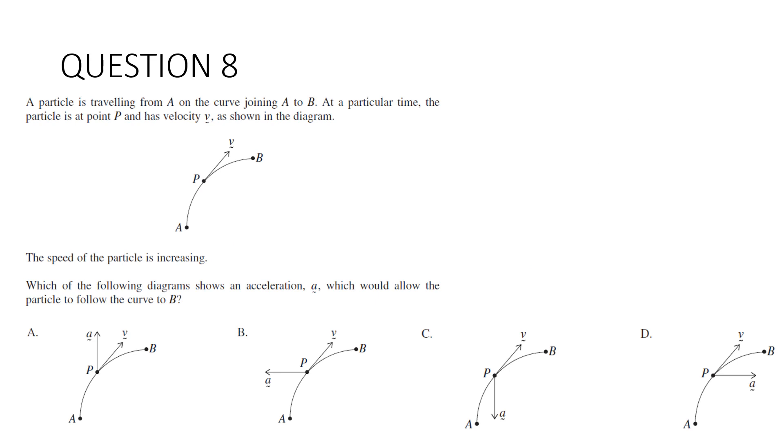Question 8. A particle is travelling from A on the curve, joining A to B. At a particular time, the particle is at point P and has velocity V, as shown in the diagram. The speed of the particle is increasing. Which of the following diagrams shows an acceleration A, which would allow the particle to follow the curve to B? Again, not a particularly difficult question. But if you don't have a physics background, it might be a bit tricky for you. One thing we do know is that we need the acceleration to point in for this particle to stay on the curve. So in neither of these cases, A or B, is that going to happen. It's going to pull it off the curve. So it's not A or B. In this case here, well, we know that the speed of the particle is increasing, is the other bit of information. Here, this is dragging against the velocity vector. So that one's going to be slowing down. This one is moving sort of in the same direction or has some commonality in the direction of V. So this one would be speeding up. So our answer is D.